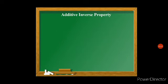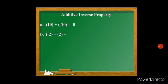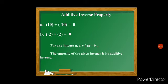The additive inverse property: 10 plus negative 10 equals 0, and negative 2 plus 2 equals 0. For any integer a, a plus negative a equals 0 — the opposite of the given integer is its additive inverse. For example, if you have negative 5, its inverse is 5; if you have negative 9, its inverse is 9; if you have 1, its inverse is negative 1.